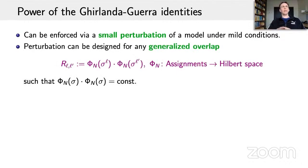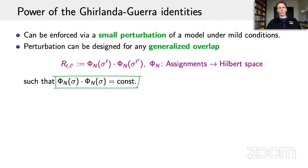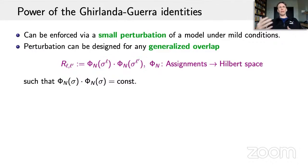Moreover, another very important feature is that this perturbation can be designed for more general overlaps: instead of the standard overlap, one can map the configuration space into a Hilbert space by some map — the only condition being that the self-overlap should be constant, meaning the map is into some sphere in that Hilbert space — and then the overlap is defined as a scalar product in that Hilbert space. One can design perturbations so that these generalized overlaps also satisfy the Ghirlanda-Guerra identities and ultrametricity.